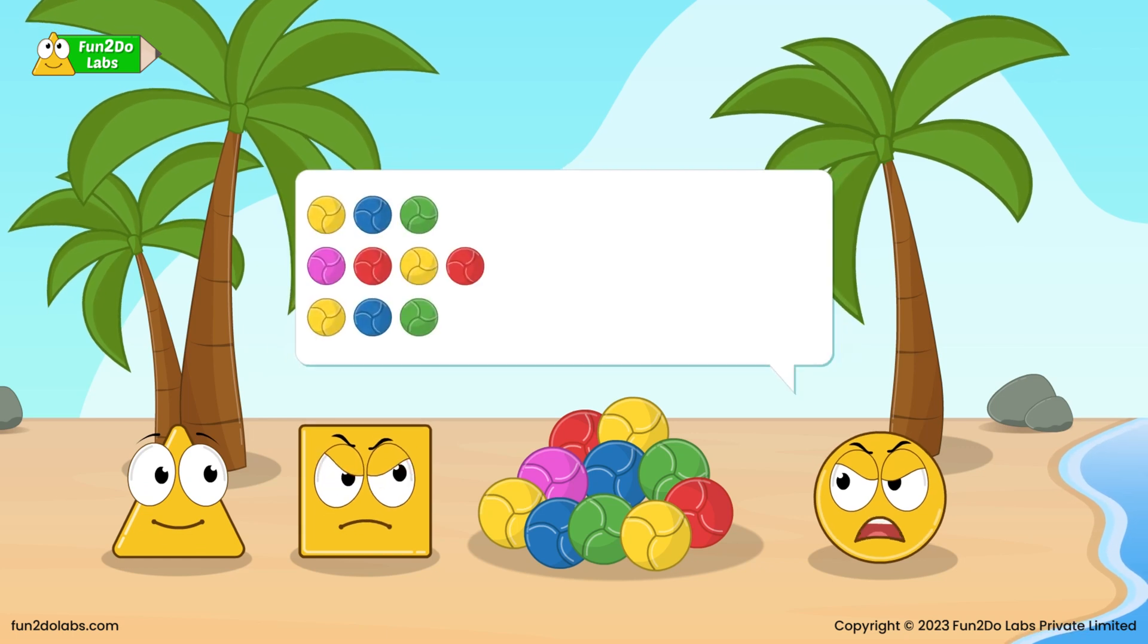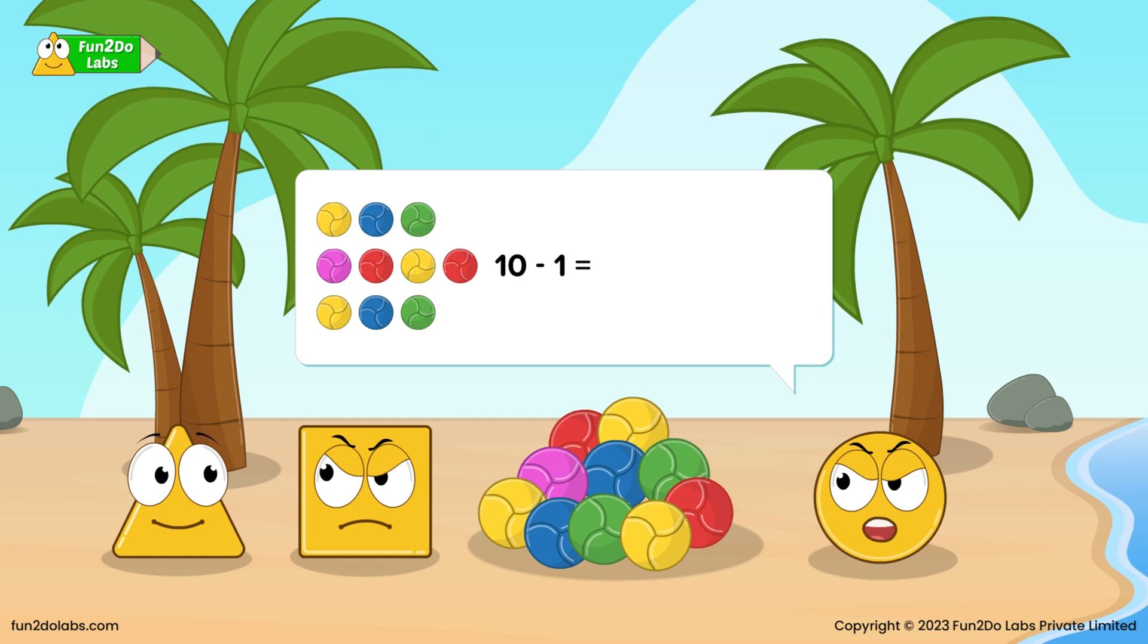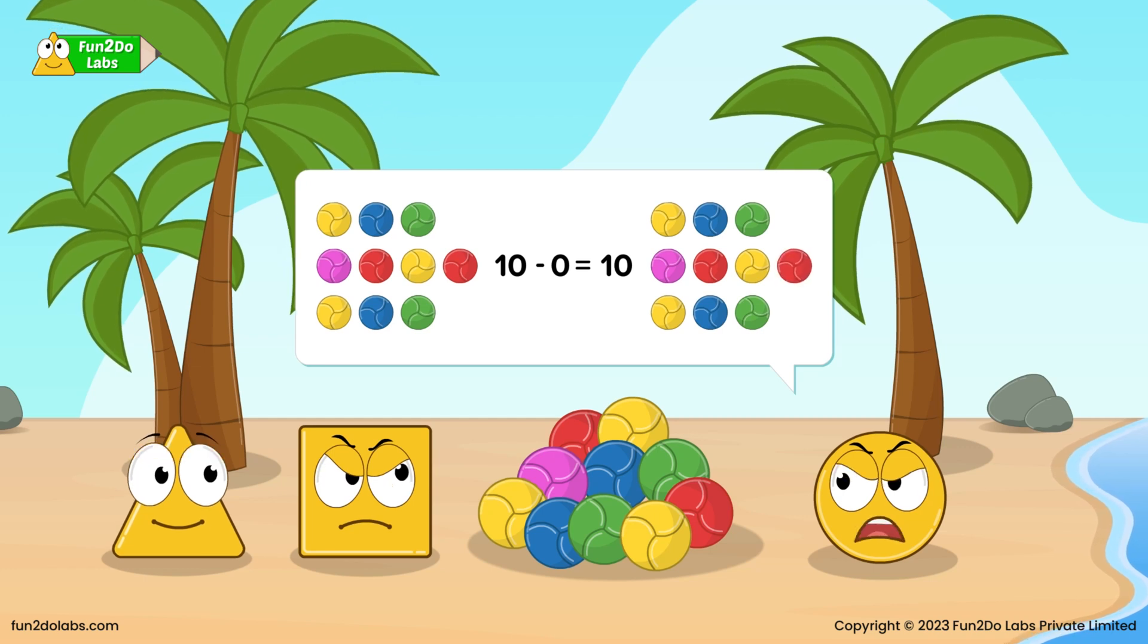If I had taken one ball, then you would have 10 minus 1 equals 9 balls. But I took nothing. So, 10 minus 0 equals 10. That's why you have all 10 balls. Think before you blame others.